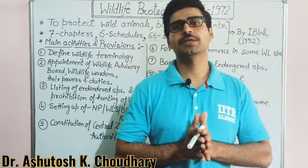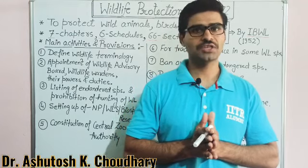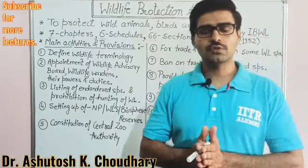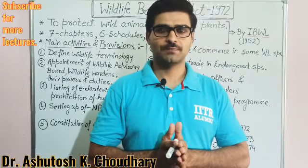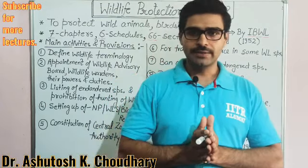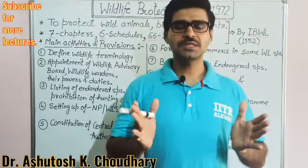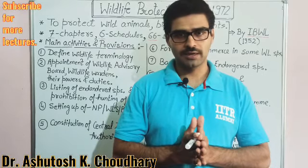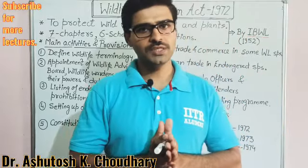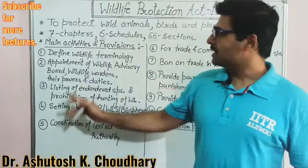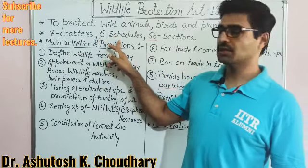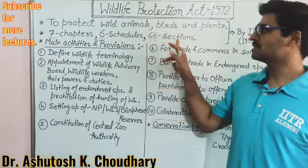Hello everyone. Today I will explain you about the Wildlife Protection Act 1972. First of all, you should know the objective of this act. The objective of this act is to protect wild animals, birds and plants — the species which are found in wilderness — to protect and conserve them. This is the main objective of this act. Under this act there are 7 chapters, 6 schedules and 66 sections.